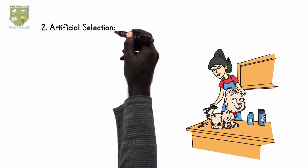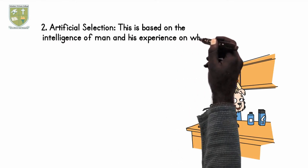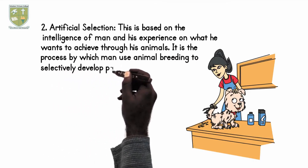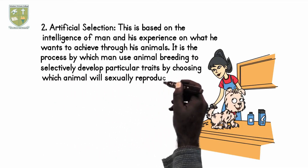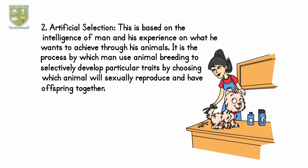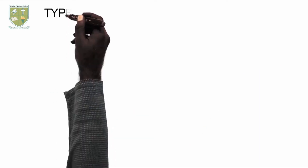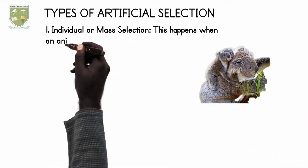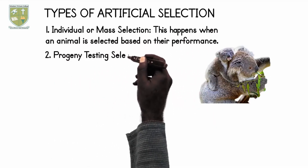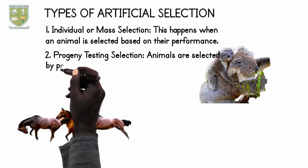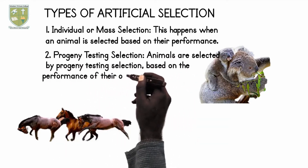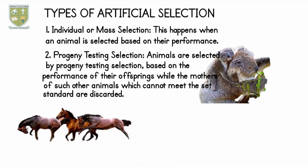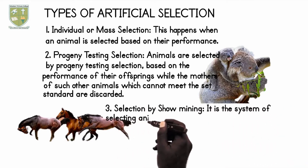2. Artificial Selection: This is based on the intelligence of man and his experience on what he wants to achieve through his animals. It is the process by which man uses animal breeding to selectively develop particular traits by choosing which animals will sexually reproduce and have offspring together. Types of Artificial Selection: 1. Individual or Mass Selection — this happens when an animal is selected based on their performance. 2. Progeny Testing Selection — animals are selected based on the performance of their offspring, while the mothers of animals which cannot meet the set standard are discarded.